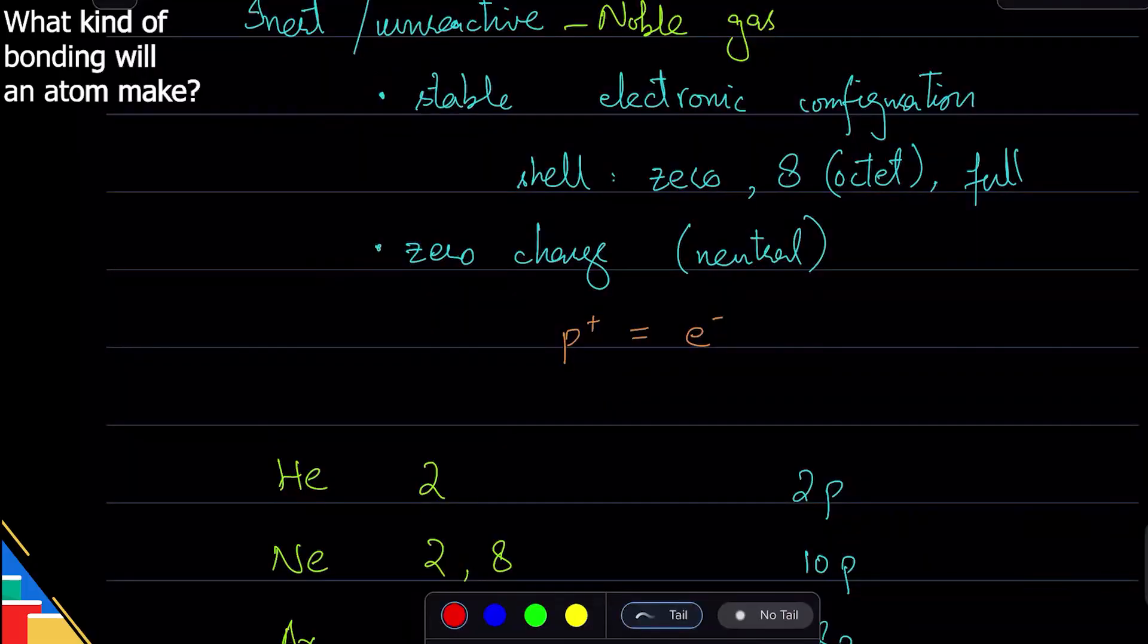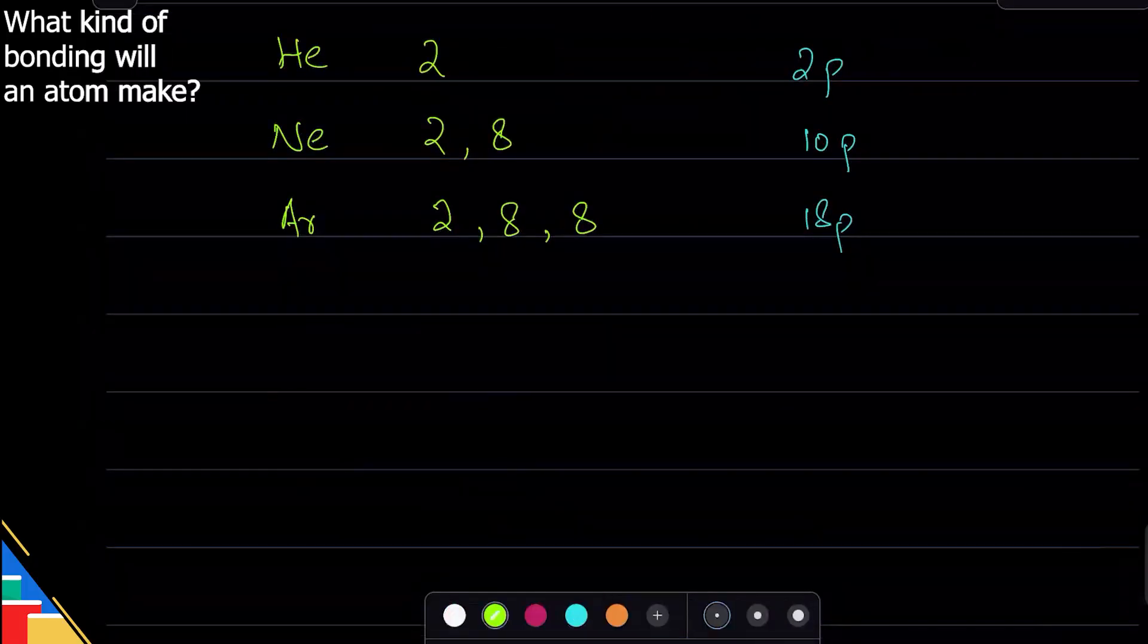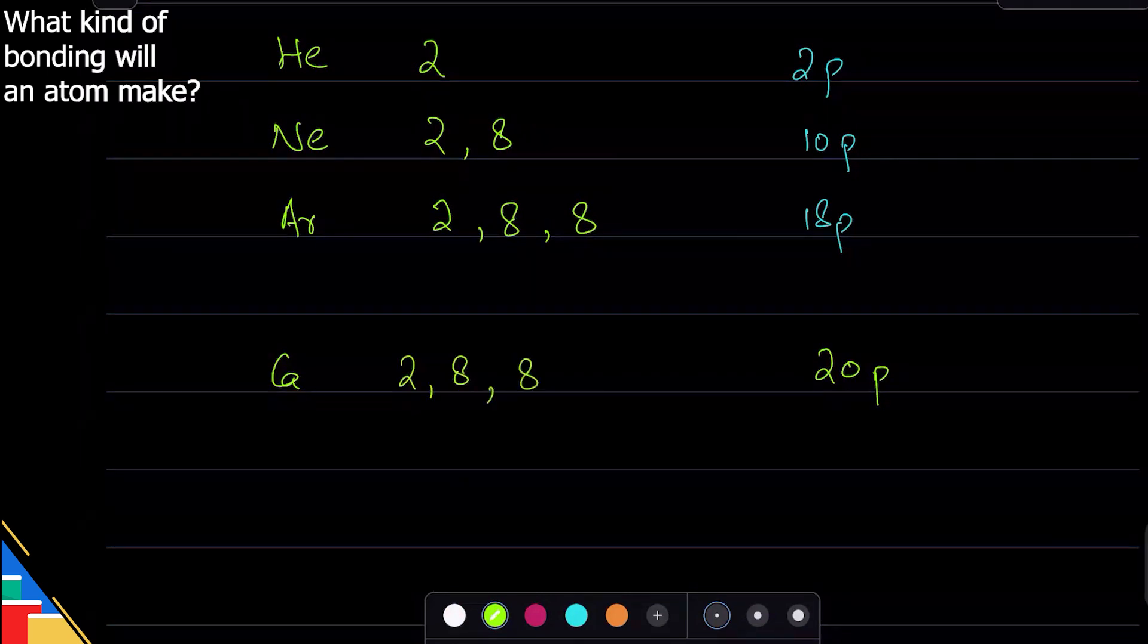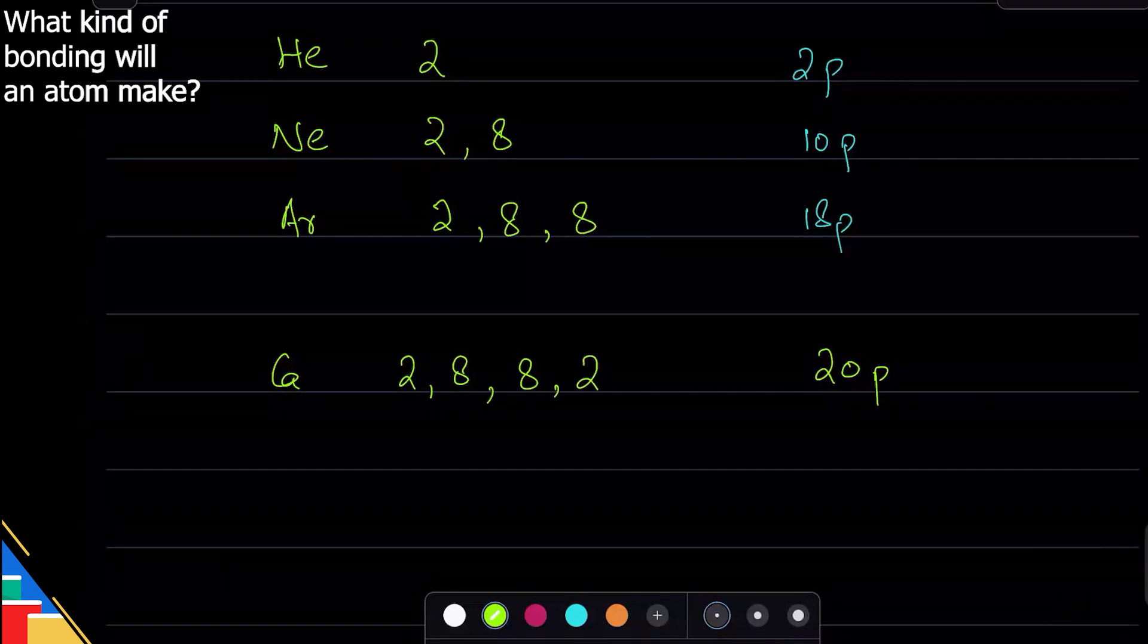Let's take another example. Calcium has 20 protons, which means 20 electrons: 2 in the first shell, 8 in the second shell, 8 in the third shell, 2 in the last shell.